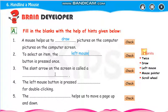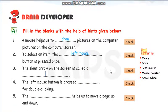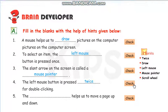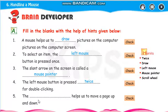The slant arrow on the screen — notice it is slanting — is called a mouse pointer. The left mouse button is pressed twice, T-W-I-C-E, for double clicking.